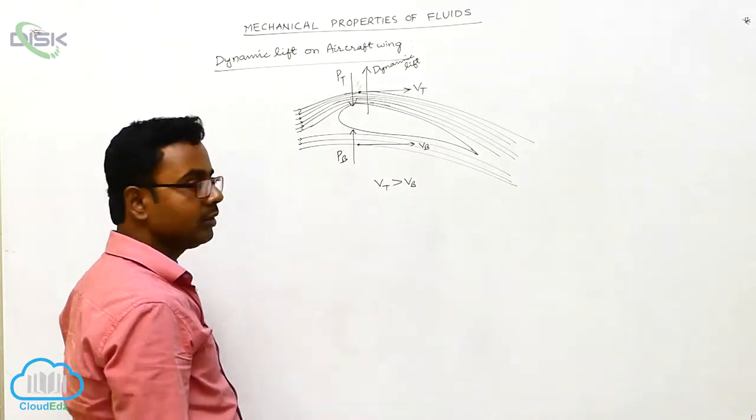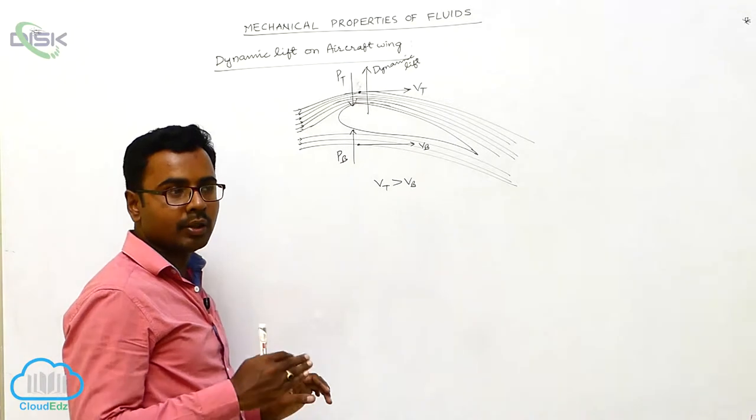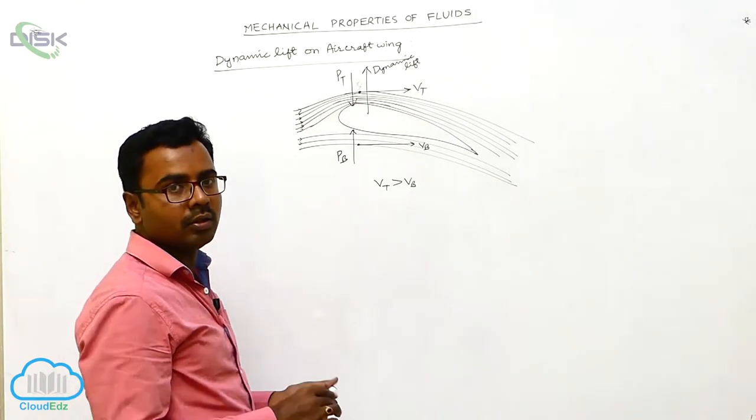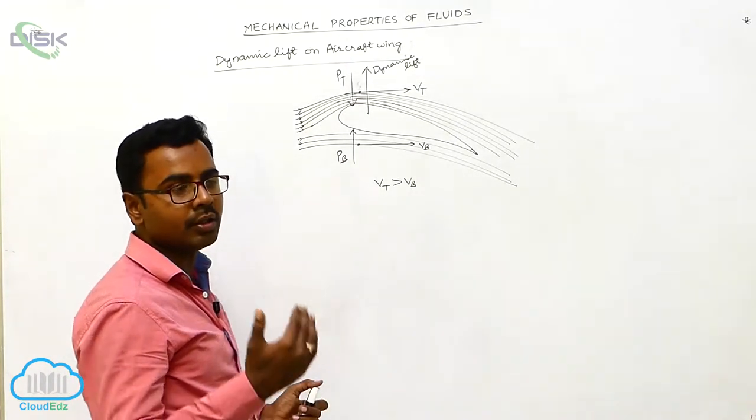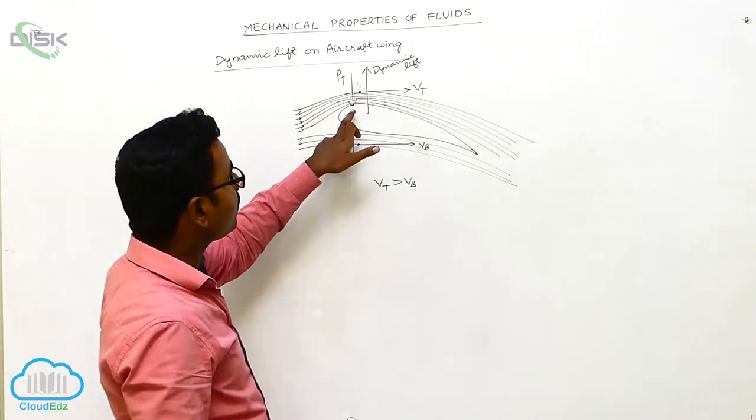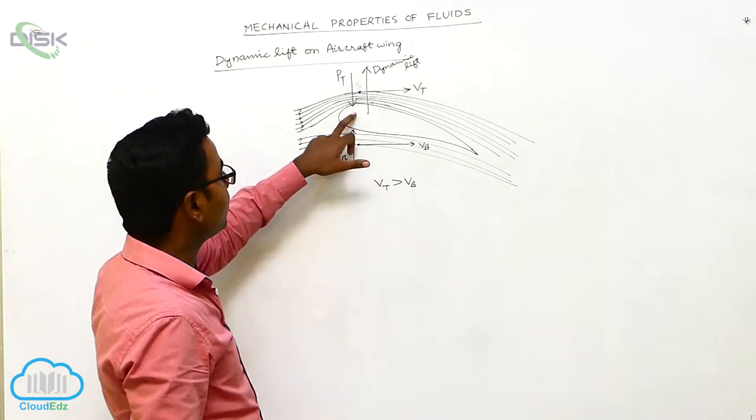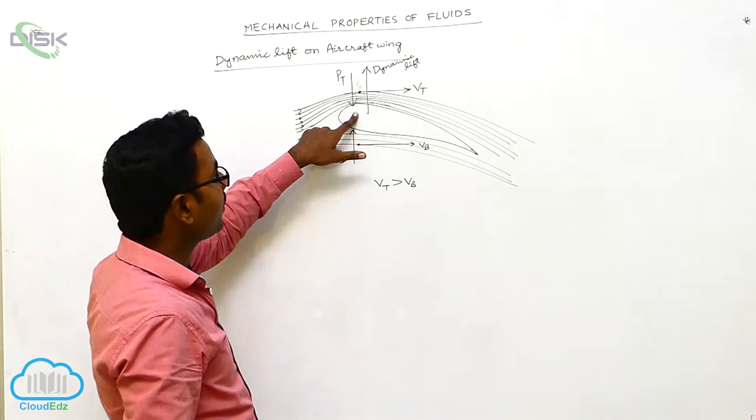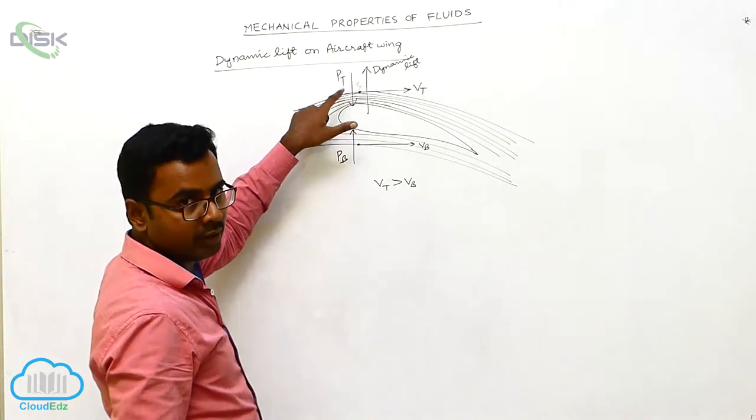Now, whenever the airplane is running on the runway, the velocity of air gradually increases over the aircraft wing. If we observe the shape of the streamlines, it is clear that above the aircraft wing the streamlines are close to each other, and below the aircraft wing the streamlines are far from each other.